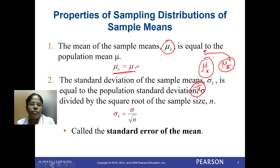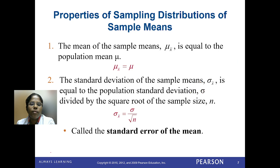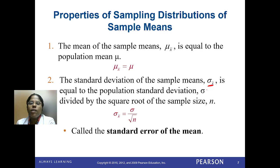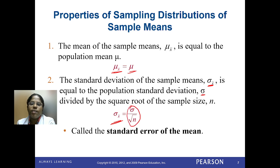The second property: the standard deviation of the sample means, sigma-x-bar, is equal to the population standard deviation sigma divided by the square root of sample size n. The mean of the sample means equals the population mean, but the standard deviation of the sample means equals sigma divided by root n. That sigma by root n is called the standard error of the mean.